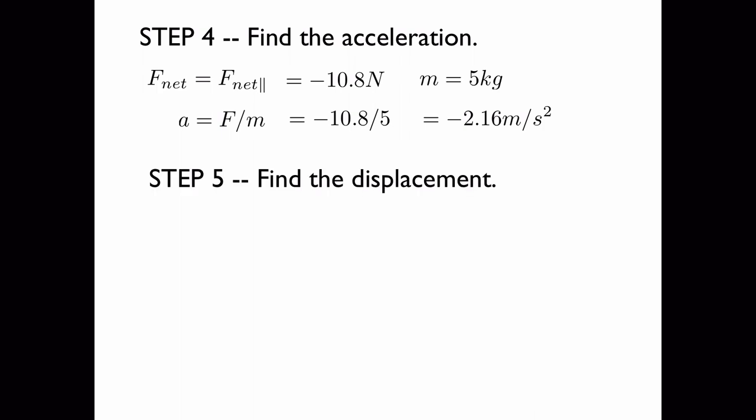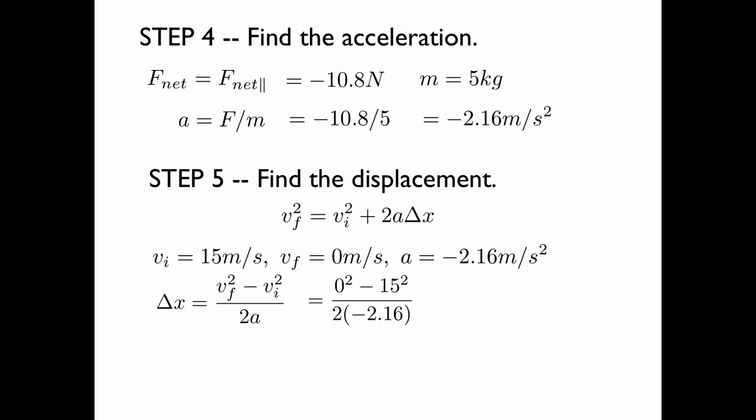Now we can find the displacement. We use this equation because we know the initial velocity, the final velocity, and the acceleration. We rearrange the equation, plug in our numbers, and insert into a calculator. After taking account the significant figures in the problem, we get a displacement of 48 meters.